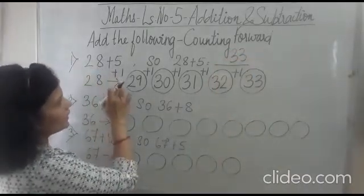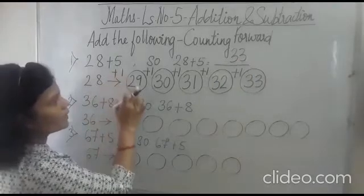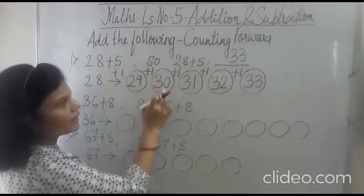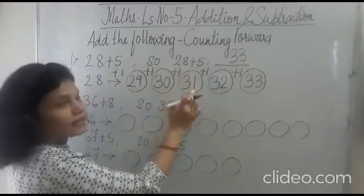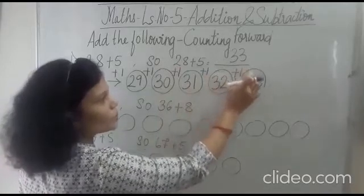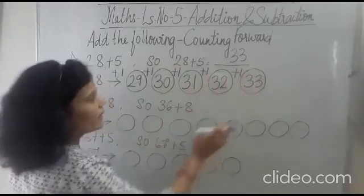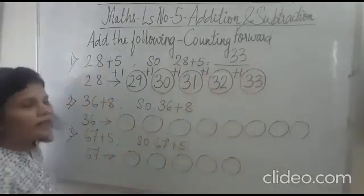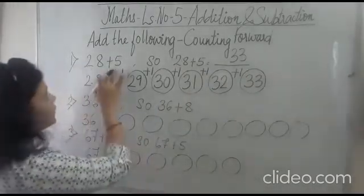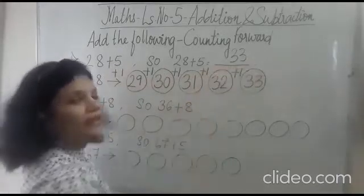See we have added 28 plus 1 is 29. 29 plus 1 is 30. 30 plus 1 is 31. 31 plus 1 is 32. 32 plus 1 is 33. That means we have taken a step of 5. 28 plus 5 is equal to 33.